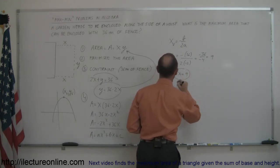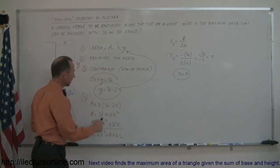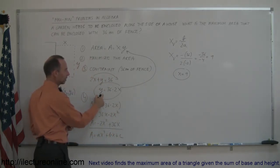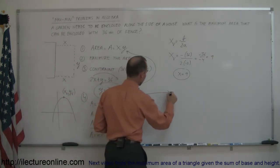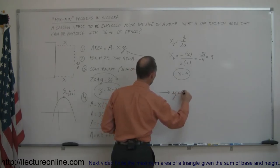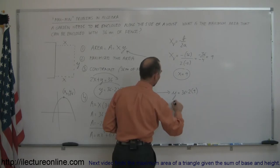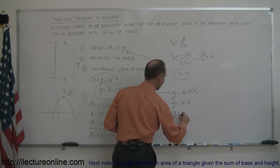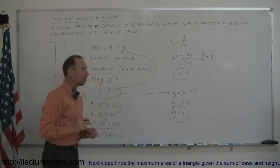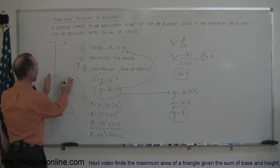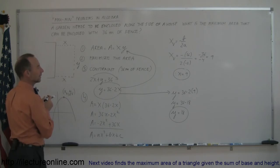And so once we know what x is equal to, we can plug that into our constraint right here to find the other variable. So we say y is equal to 36 minus 2 times x, and x is equal to 9. So y is equal to 36 minus 18, that would be 18. So the maximum area can be made when we let the width equal to 9 and y equal 18.